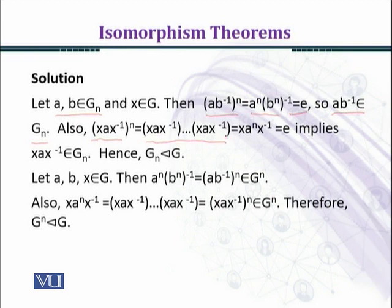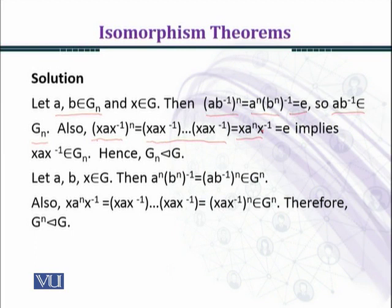We take (x·a·x^{-1})^n. This can be written as x·a·x^{-1} multiplied n times. Here you can see the x^{-1}·x in the middle cancel, so we get x · a^n · x^{-1}. Since a belongs to G_n, a^n = e, so x·a^n·x^{-1} = x·e·x^{-1} = e, which means x·a·x^{-1} belongs to G_n.